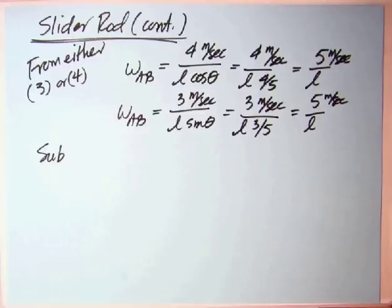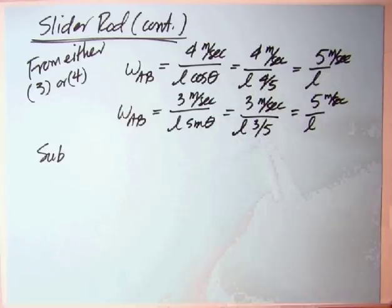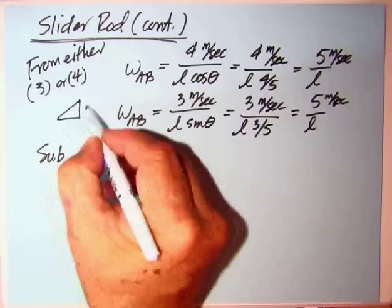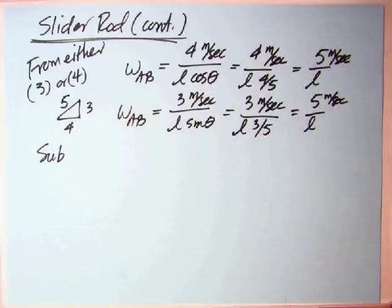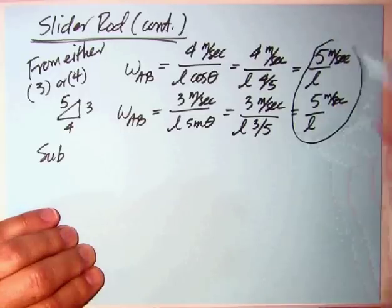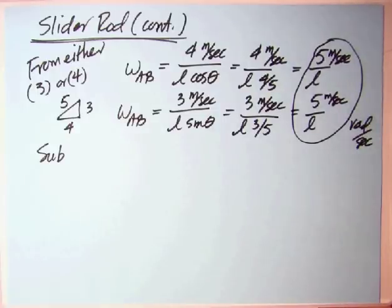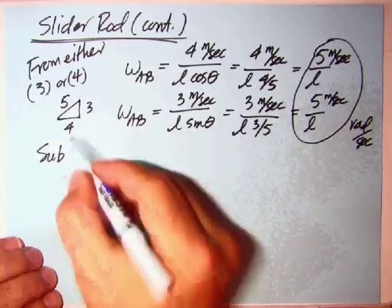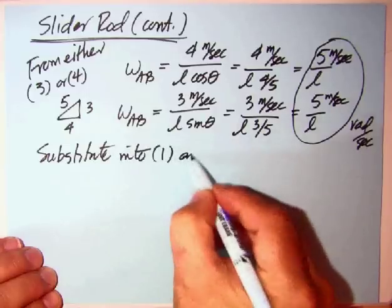From either 3 or 4, we can now take that 3, 4, 5 triangle, where cosine is 4 fifths and sine is 3 fifths. Either way, we get 5 over L. Of course, we've got 5 meters per second in the numerator. L will have meters. So really, what both of these will be is in radians per second. And that's what we need, omega in radians per second. Now, we substitute into 1 and 2.